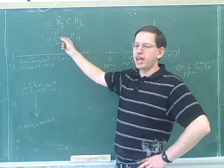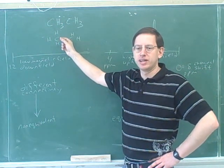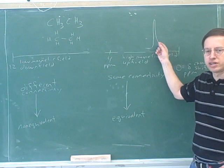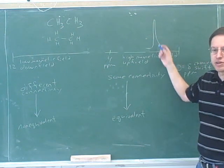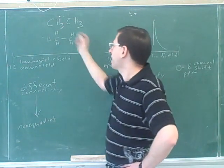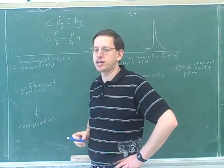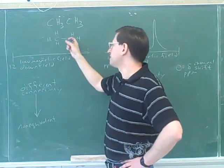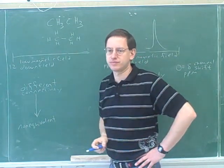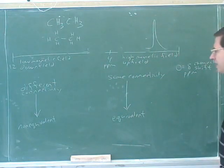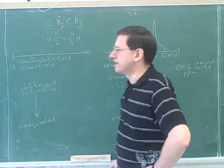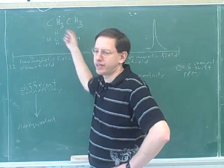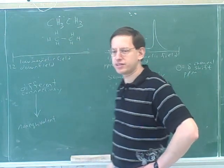So how many peaks are we going to get here? Still only one peak. So it's possible for hydrogens to be on different carbons and still be equivalent, as long as the carbons they're on have the same connectivity. Connectivity is a word that's a little hard to define, but if we see a couple of examples we'll get a feel for what it means.